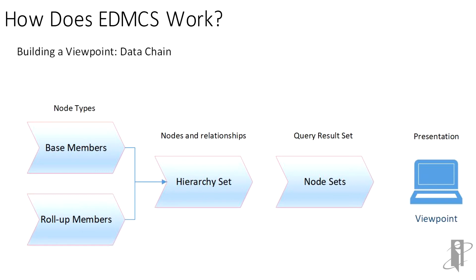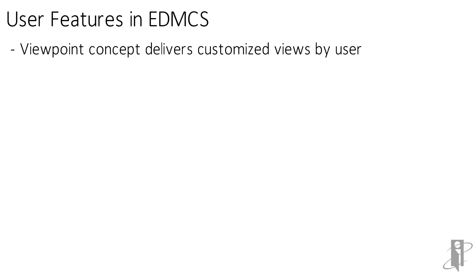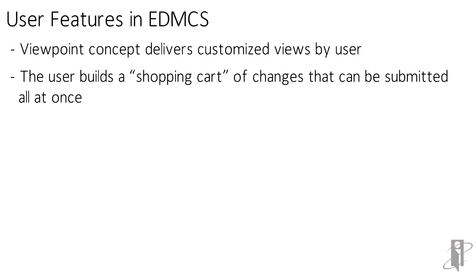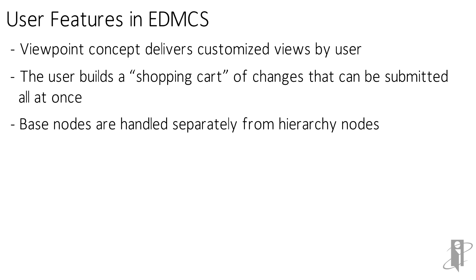Here's how the data chain works in building a hierarchy for a viewpoint. Node types, which include base members and their roll-ups, combine to create what's known as a hierarchy set. This hierarchy set is then queried to create a customized node set that is returned to the user via the viewpoint. Changes made to the hierarchies are tracked and placed into a holding area similar to a shopping cart on an online store such as Amazon, which facilitates bulk updates to the nodes the user has worked on.